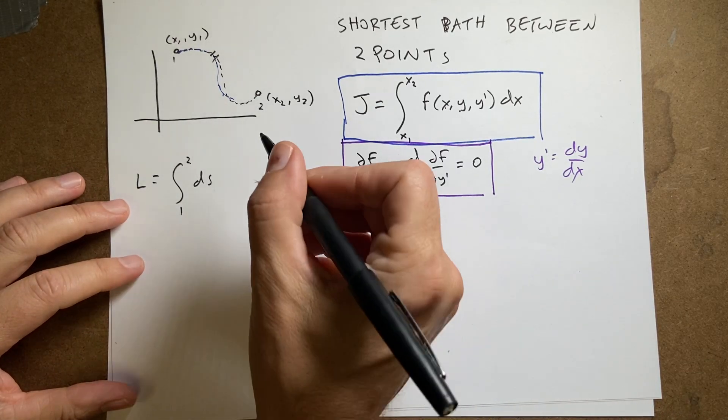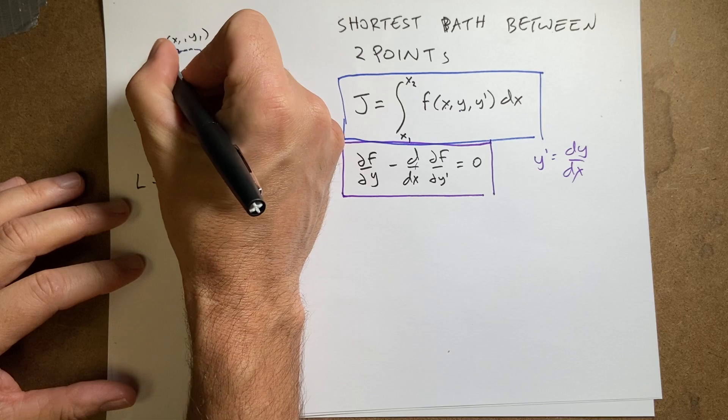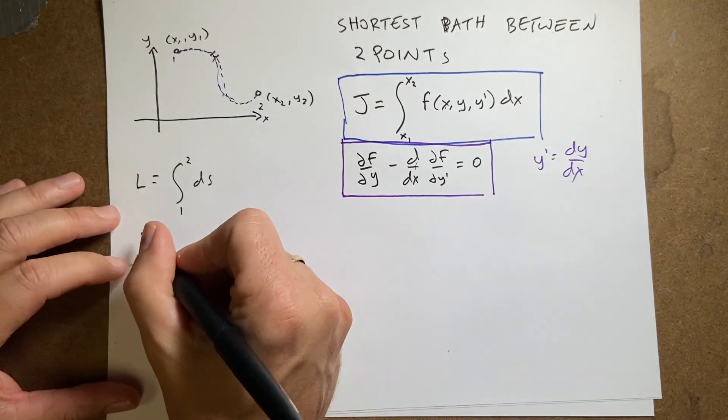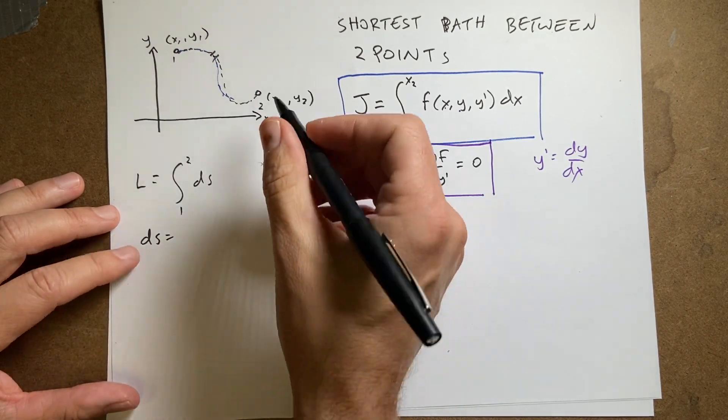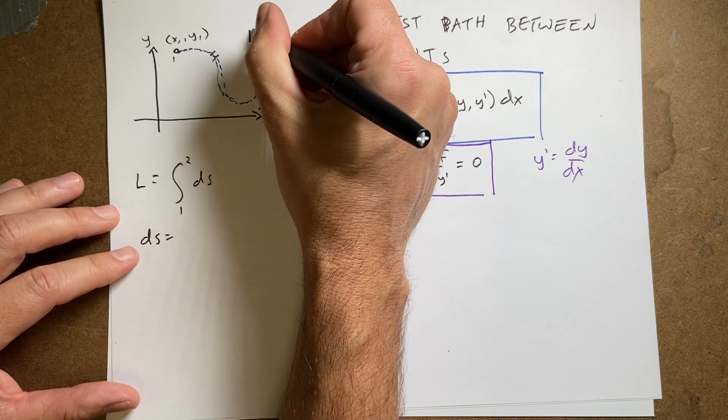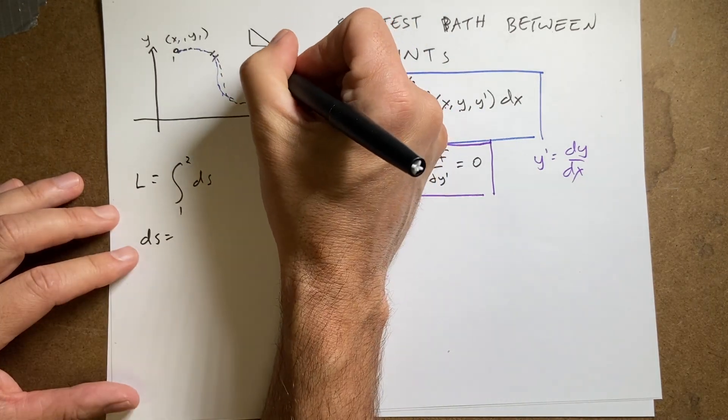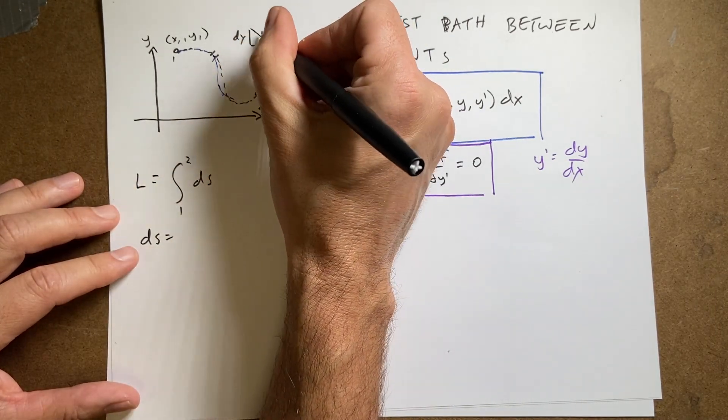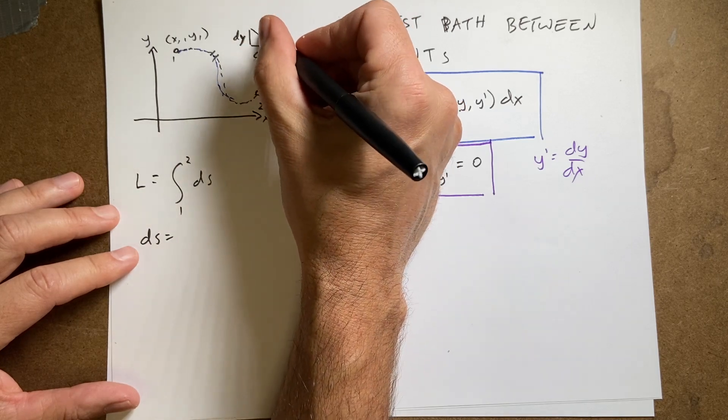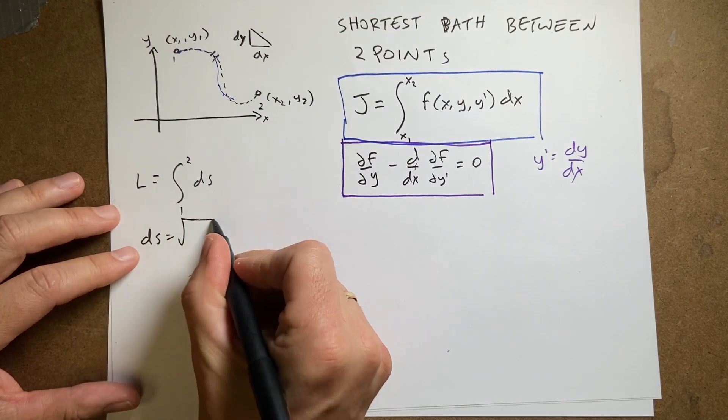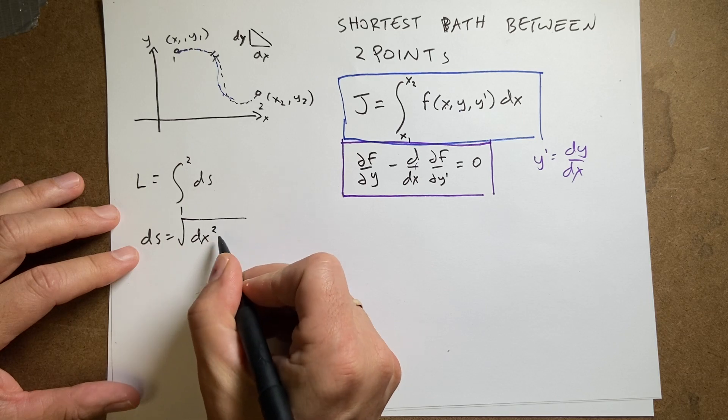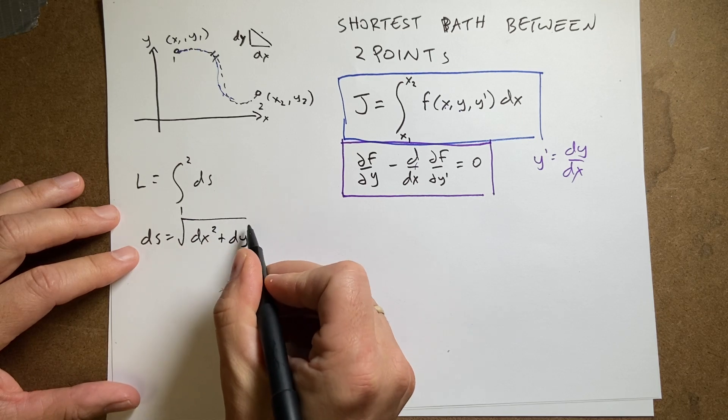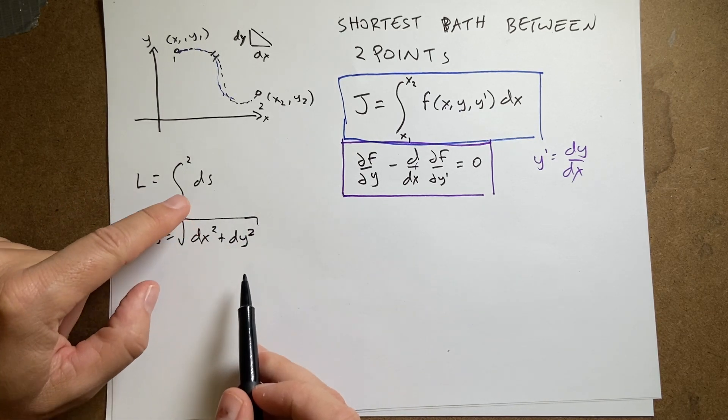So, in Cartesian coordinates, x, y, in two dimensions, then ds is going to be, you can imagine this, right? There's my little path piece. This is dx, that's dy, that's y. So, that would be the hypotenuse. So, it would be the square root of dx squared plus dy squared. And that's my function I'm going to put in there.